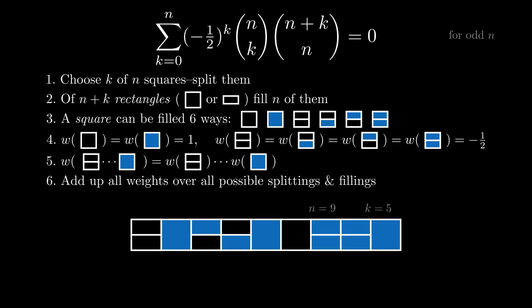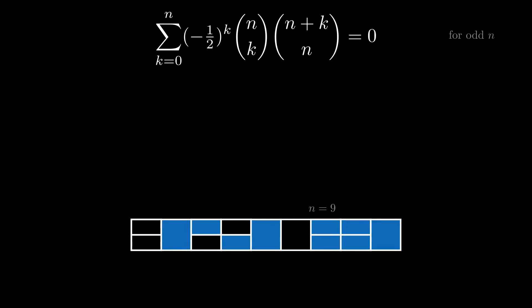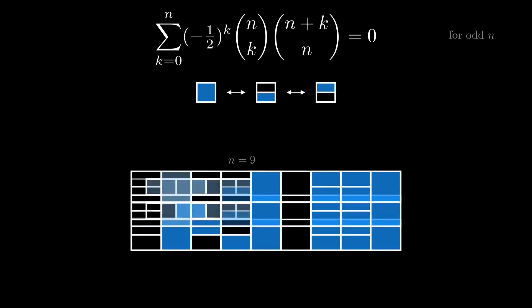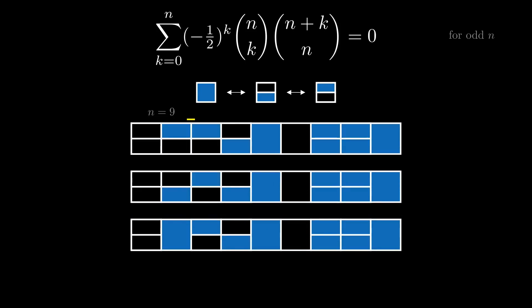I claim that the configurations can be partitioned into groups of three, each of which has a total weight of zero. Remember that for this setup we have n odd. Because there are n filled boxes, and n is odd, that means there's always some square with exactly one rectangle filled. Either it's a filled square, or it's split bottom filled, or split top filled. Find the first such square, and put the configuration in trijection with the other two possible odd fillings swapped in at that location.